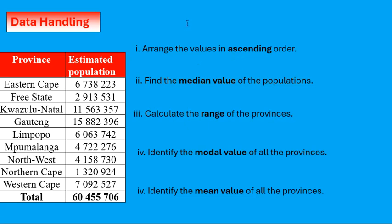Ascending order means from the smallest to the biggest. So the Northern Cape has the smallest population, followed by Free State, then North West, Mpumalanga, and then Limpopo.